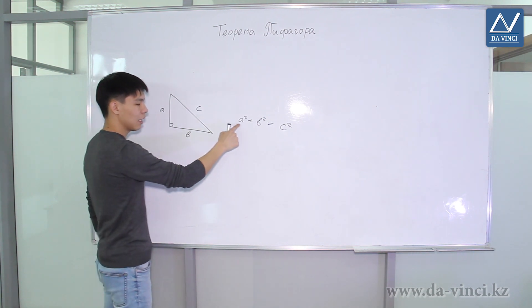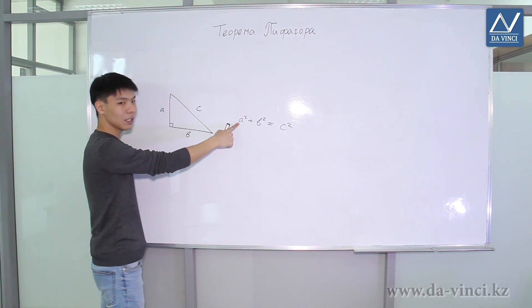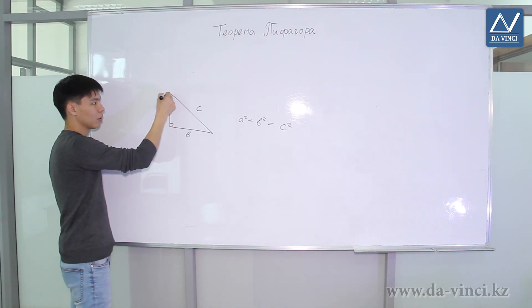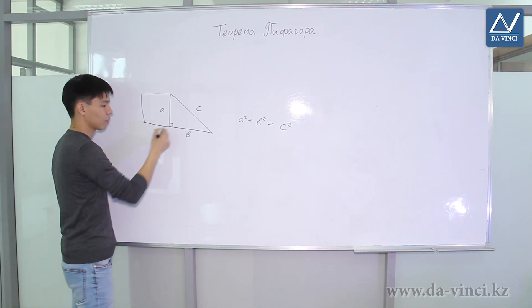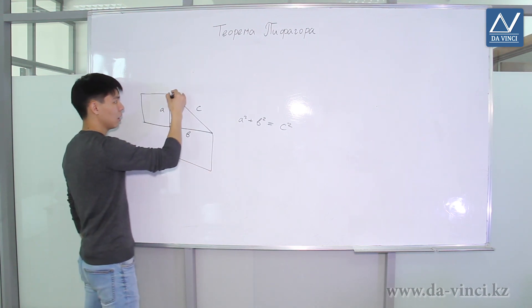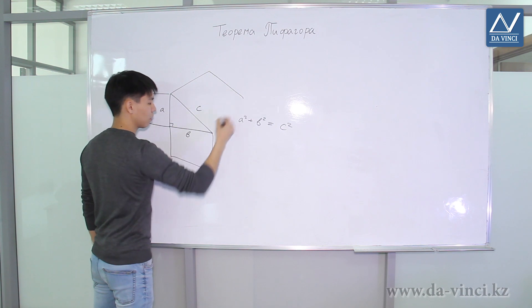But we know that A squared value describes the area of a square with side A. That is, if we build on this leg A square, build a square on this leg, and build a square on the hypotenuse.